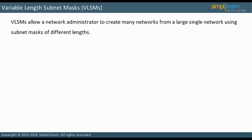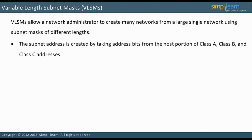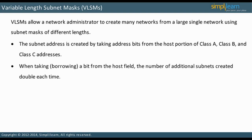Variable length subnet masks allow a network administrator to create many networks from a large single network using subnet masks of different lengths. The subnet address is created by taking address bits from the host portion of Class A, Class B, and Class C addresses. When taking a bit from the host field, the number of additional subnets created will double each time.